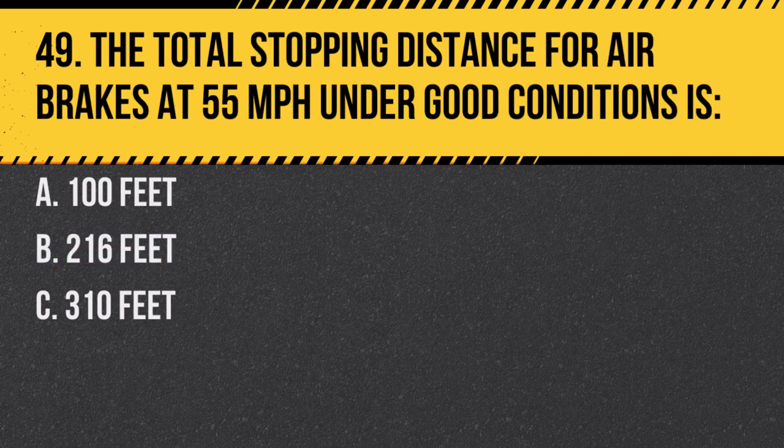Question 49. The total stopping distance for air brakes at 55 miles per hour under good conditions is: A. 100 feet. B. 216 feet. C. 310 feet. Answer B. 216 feet. This includes perception, reaction, and braking distance.